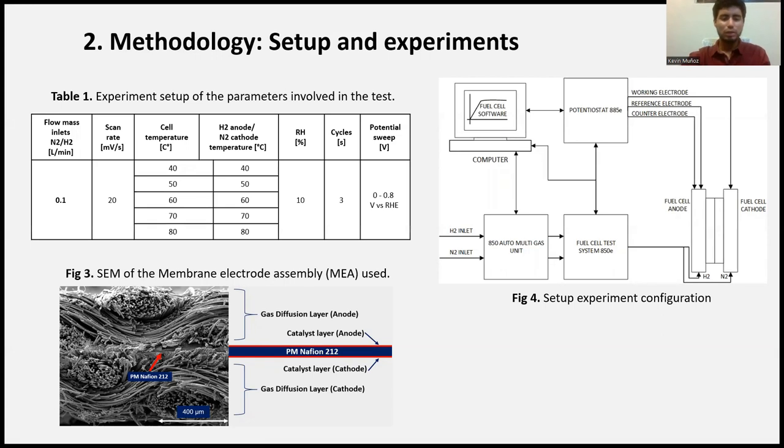To summarize the equipment parameter settings: volumetric gas flow rate of 0.1 liters per minute. The voltage scan rate was 20 millivolts per second. Fuel cell and electrode temperature range between 40 to 80 degrees Celsius, in a step of 10, with relative humidity of 100% for inlet gases for each experiment. The voltage sweep was performed from 0 to 0.8 volts for three times, in order to obtain reportable, suitable, and verifiable data.